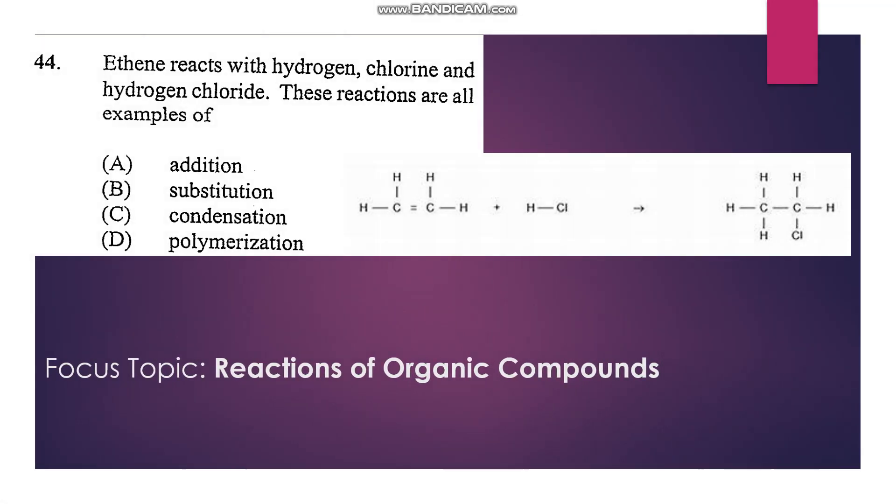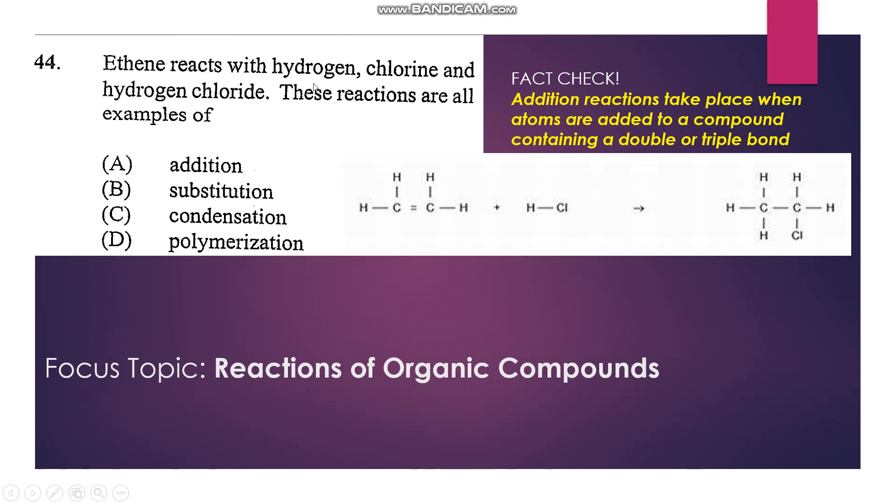44: Ethene reacts with hydrogen, chlorine, and hydrogen chloride. These reactions are all examples of—ethene is an alkene, so all these substances can add across the double bond. Therefore, the reaction is an addition reaction. That's A.